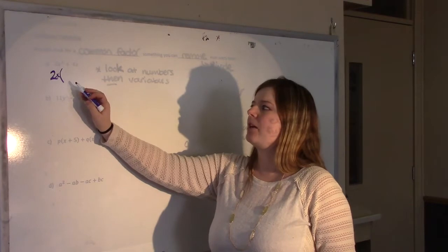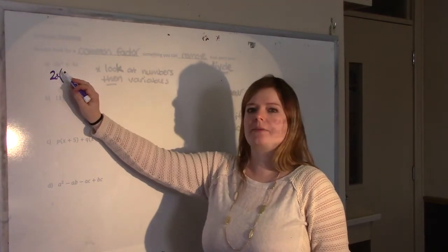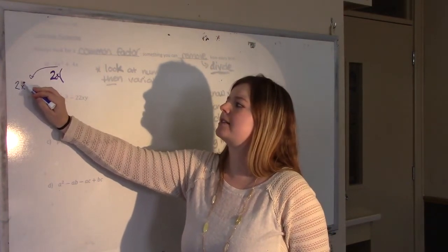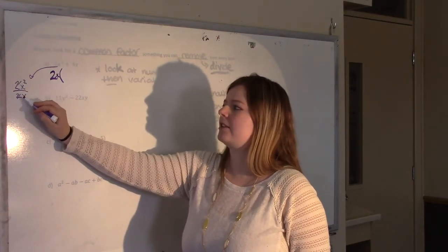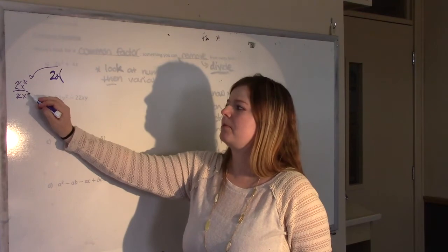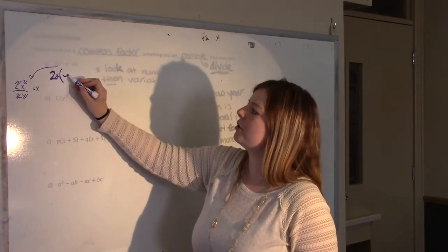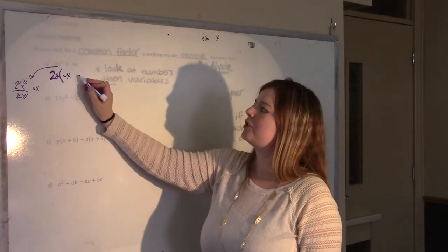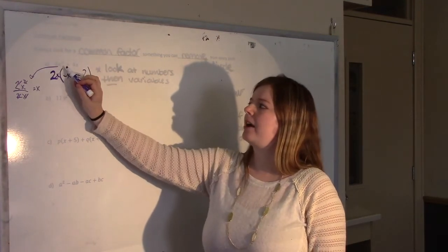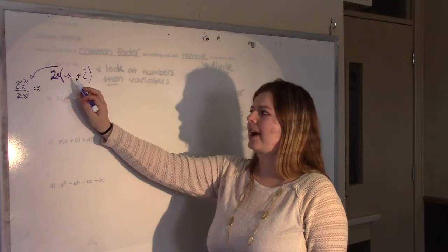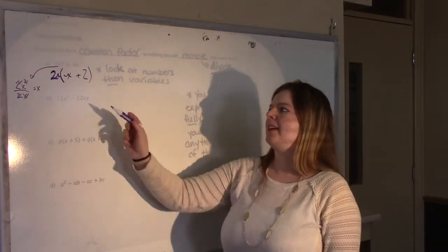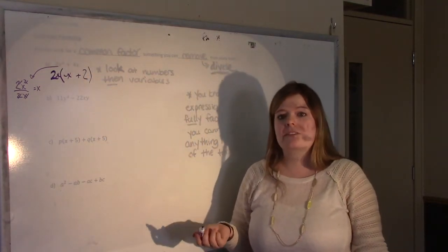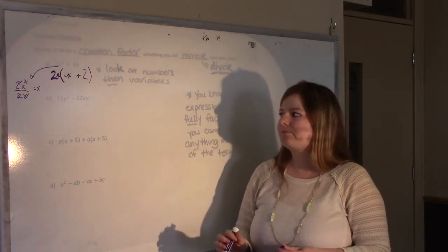Put the brackets and think: what is left over after I divide 2x² by 2x? The 2s cancel and your exponent laws say you're left with just x. Then 4x divided by 2x is just 2. So 2x² + 4x factors to 2x(x + 2). You can check by expanding: 2x times x is 2x², and 2x times 2 is 4x. You should always at least do that mentally as a quick check to make sure you're right.